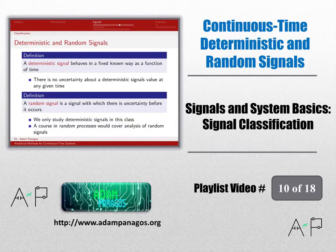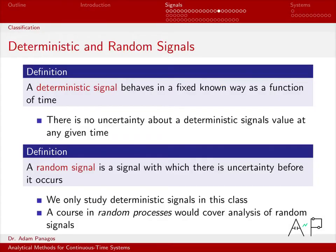The next signal classification that we want to talk about is the difference between deterministic signals and random signals. For this course, it's actually pretty straightforward because everything that we deal with is going to be a deterministic signal, and not until later on you'll probably take a course in random variables, maybe random signals.